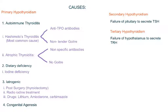Let's begin with the causes of primary hypothyroidism. Primary means that the problem is in the thyroid gland, and hypothyroidism means underactive thyroid gland. The most common cause of primary hypothyroidism is autoimmune thyroiditis, which is of two types: Hashimoto's thyroiditis and atrophic thyroiditis.